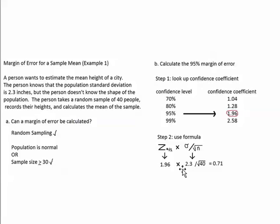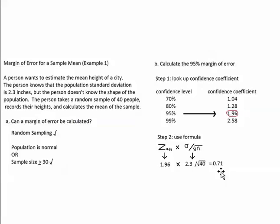Working through the math: start by finding the square root of 40, then divide 2.3 by that number, then multiply 1.96 by the result. The answer is 0.71. So in this situation, the 95% margin of error is 0.71.